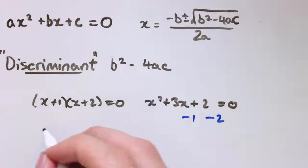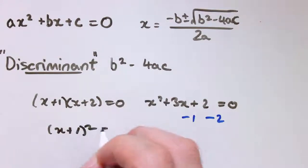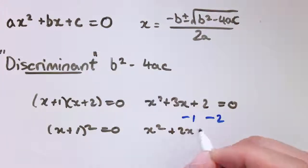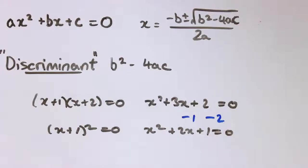And if I took something like x plus 1 squared equals 0, or x squared plus 2x plus 1 equals 0, that just has one solution, minus 1. Whereas if I took something like x squared plus 1 equals 0, that has no solutions, no real roots.